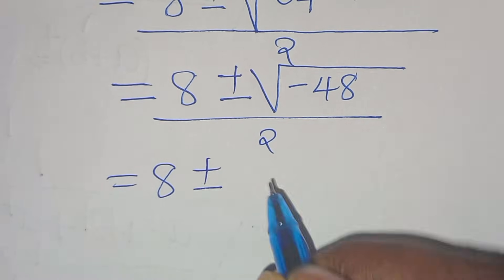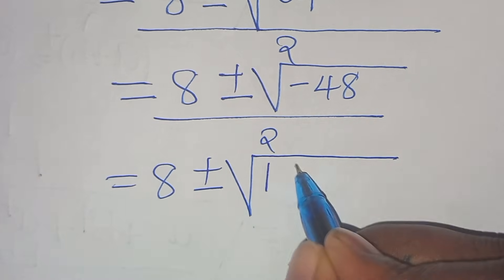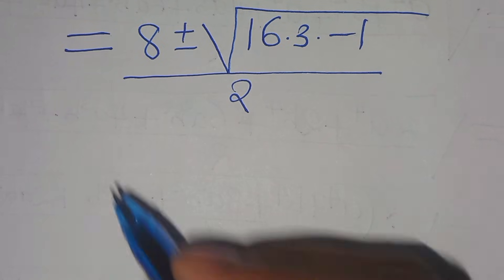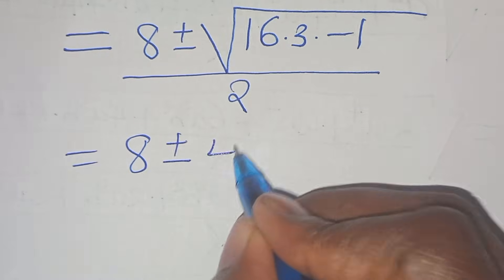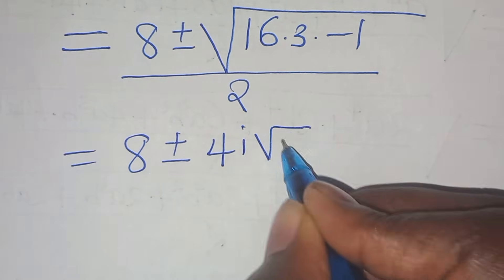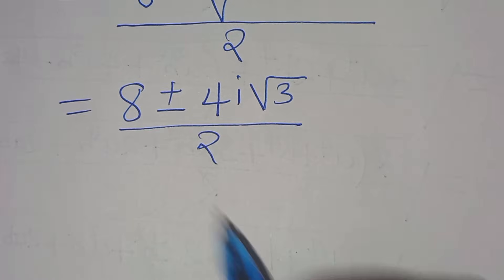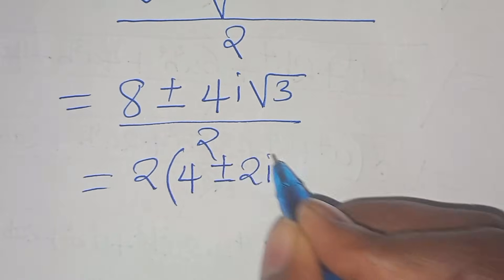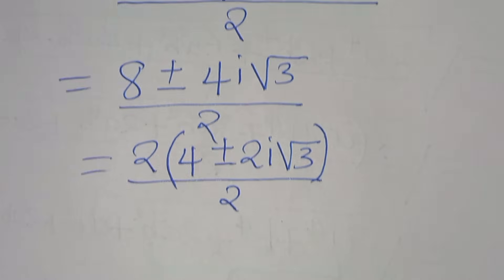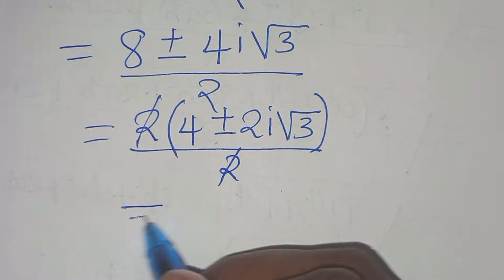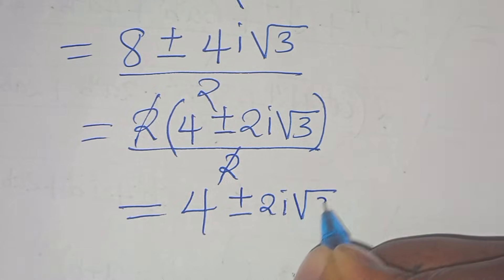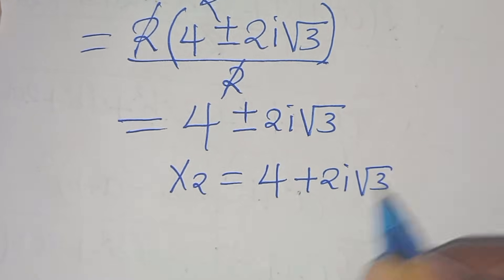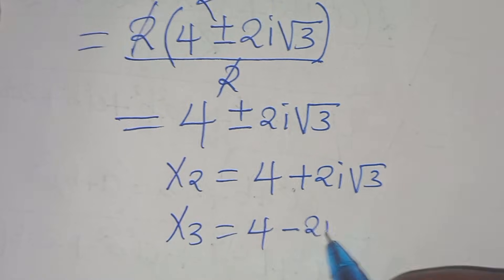So this is 8 plus or minus the square root of minus 48. We can express the square root of minus 48 as the square root of 16 multiplied by 3 multiplied by minus 1, all divided by 2. The square root of 16 is 4, square root of minus 1 is i, then square root of 3 divided by 2. In the numerator 2 is common, so factoring out 2 gives 4 plus or minus 2i square root of 3, divided by 2. Simplifying, we get 4 plus or minus 2i square root of 3. So x2 is equal to 4 plus 2i square root of 3, and x3 is equal to 4 minus 2i square root of 3. These are 2 complex solutions under case 1.